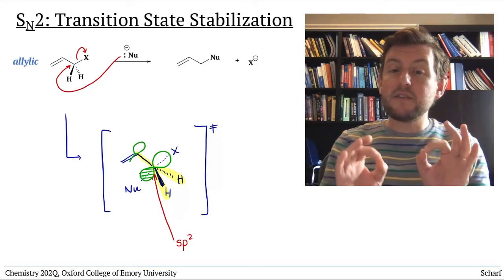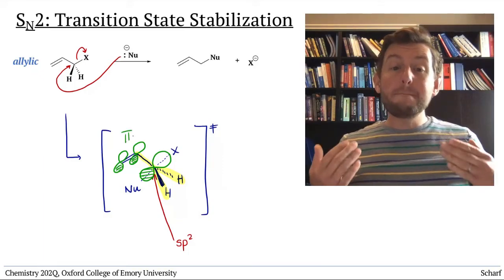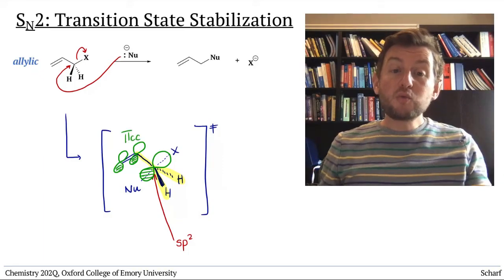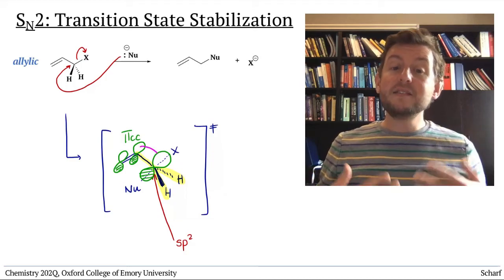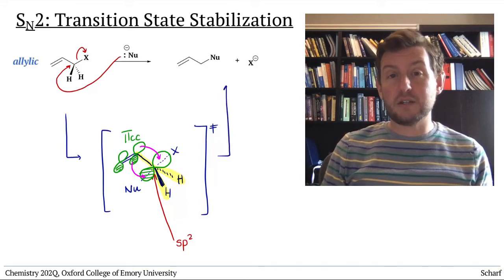And in the case of the benzylic and allylic systems, there's a filled pi bond right next door that can stabilize that p orbital, and therefore stabilize the transition state.